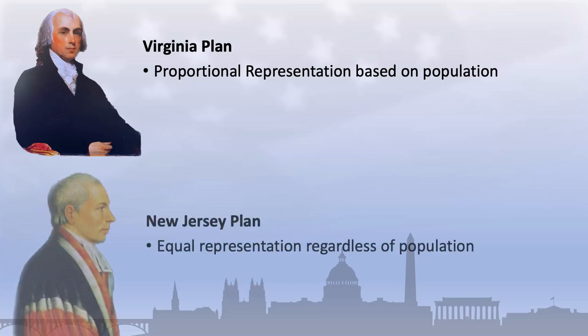By contrast, the New Jersey Plan, proposed by William Patterson, called for equal representation in both houses of Congress, with each state having one vote. The debate over these plans was contentious. Smaller states feared that proportional representation would give too much power to the larger states, effectively cutting them off from any real influence in congressional decision making. They argued that equal representation as provided in the New Jersey Plan was fairer and would better protect the interests of smaller states. The larger states countered that proportional representation was more democratic and would better reflect the will of the people.